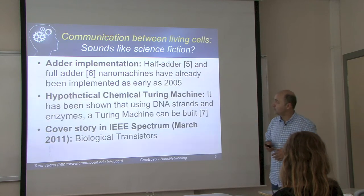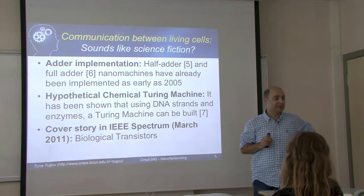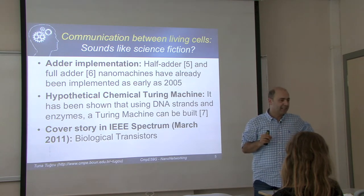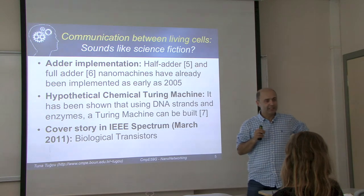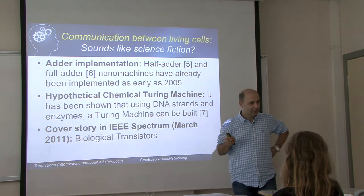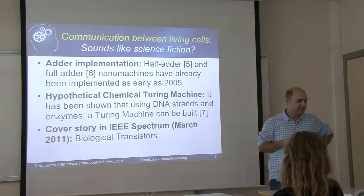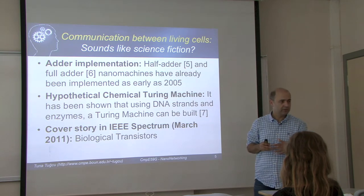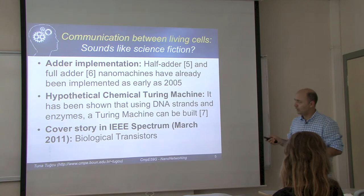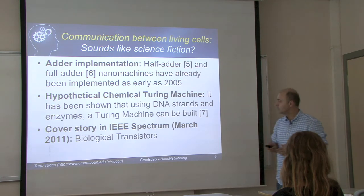Is using cells reasonable? When I started in this topic, I wanted to show that if cells can do addition, they can also do subtraction — proving you can control and relay information. I later realized this was already solved as early as 2005, first a half-adder then a full adder implemented in the lab. Additionally, a hypothetical chemical Turing machine — a functional one using DNA strands and enzymes — has been shown to work.